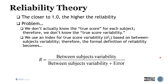The closer this reliability measure is to one, the higher the reliability. However, we don't actually know the true score — we can only estimate it — so we don't know the true score variability. We use an index for true score variability based on between-subjects variability. The formal definition of reliability is: R = between-subjects variability / (between-subjects variability + error).